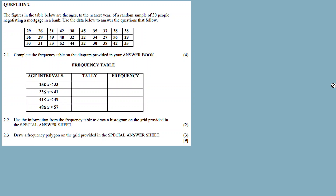The figures in the table below are the ages to the nearest year of a random sample of 30 people — specifically a bank manager, or a negotiator for a mortgage in a bank. Use the table below to answer the questions that follow.